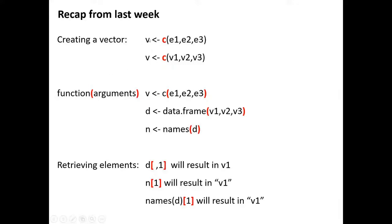You make an assignment using this arrow. It will create a variable. By making an assignment you're creating a variable called V — that's the result of the combine function with these arguments. These are the elements that you want to store in the vector.